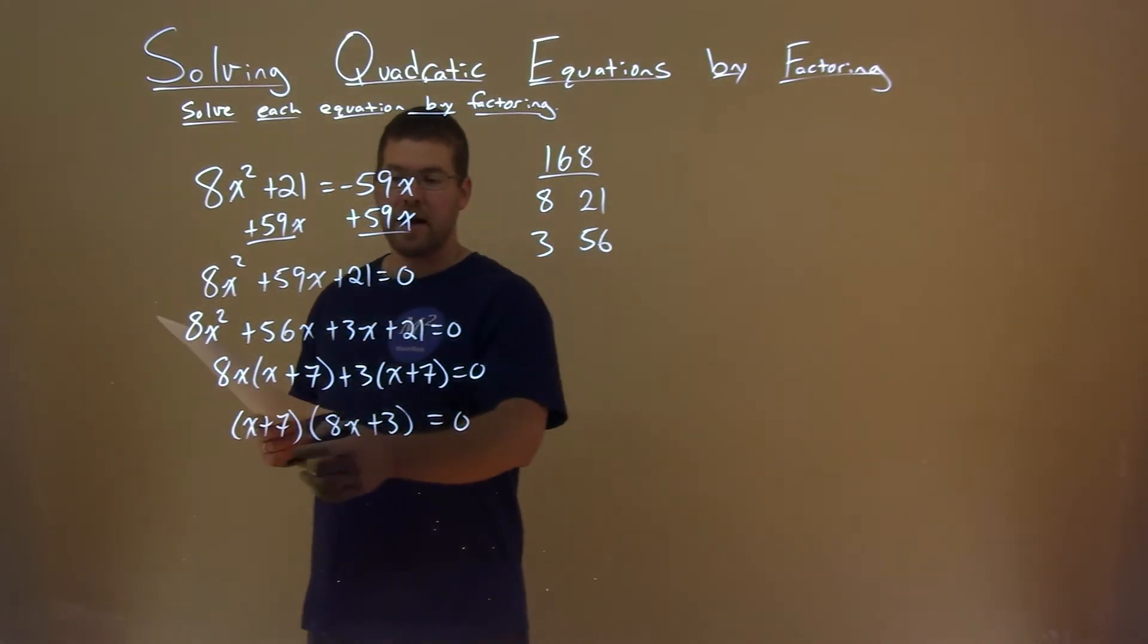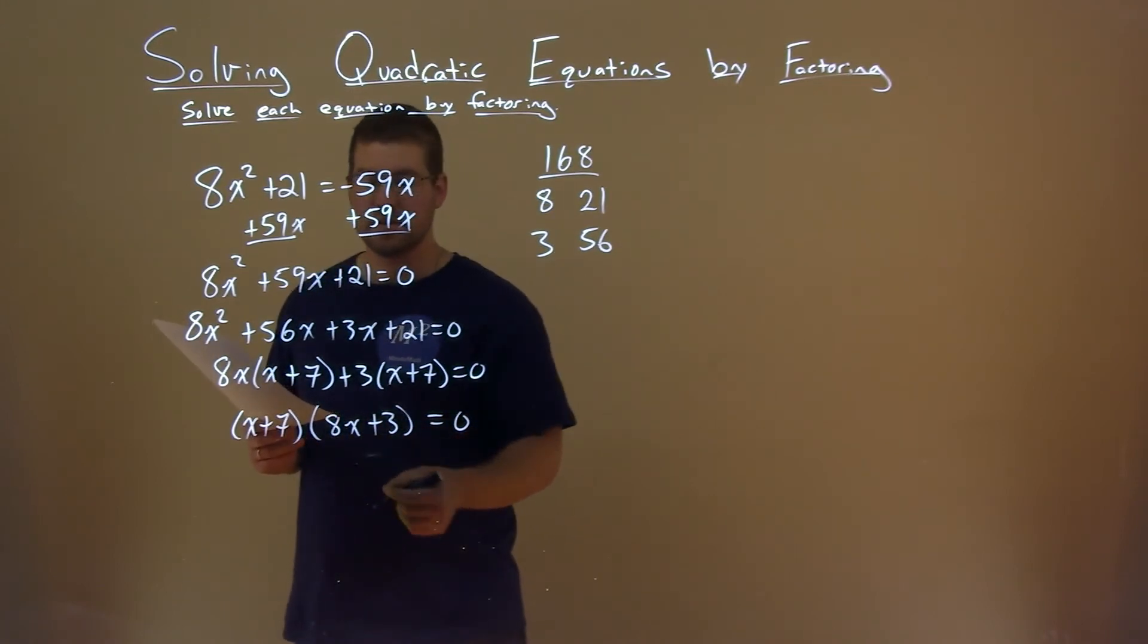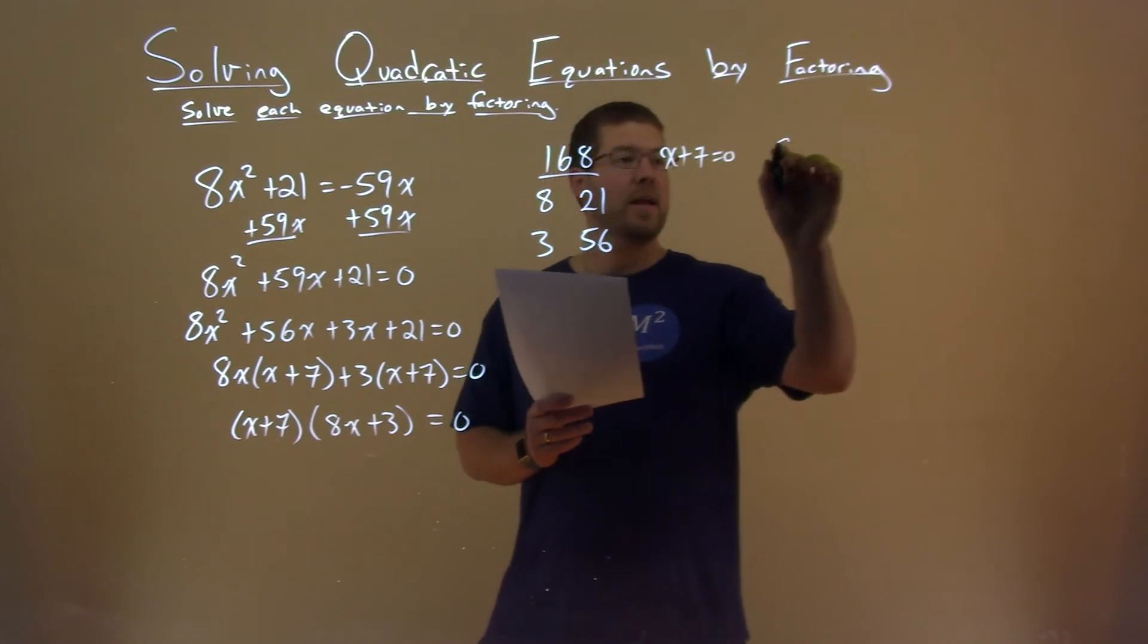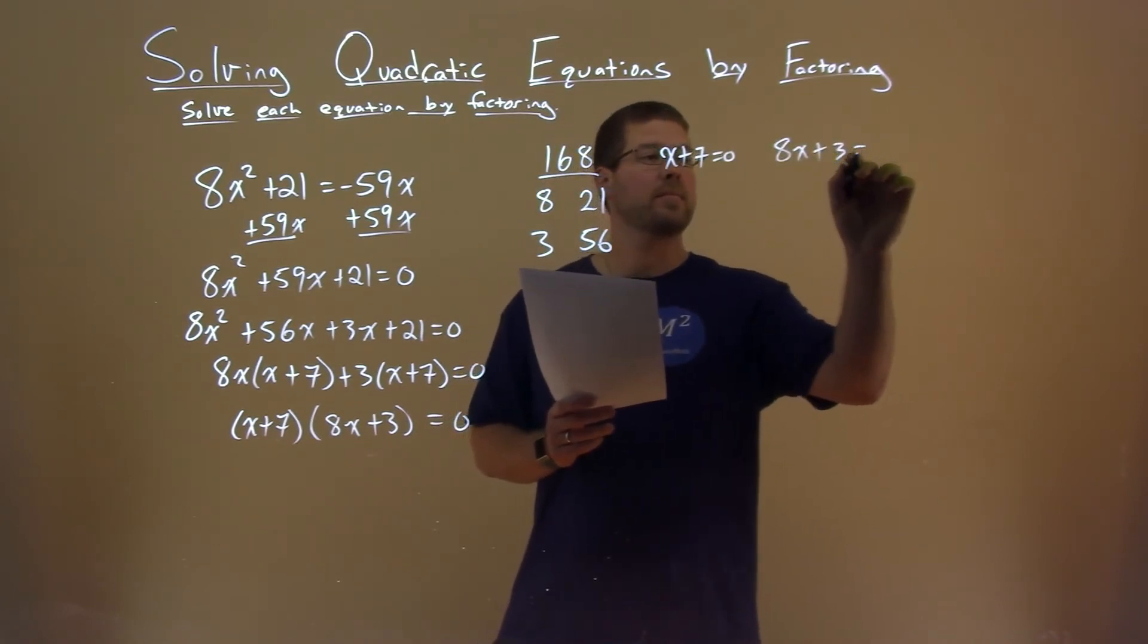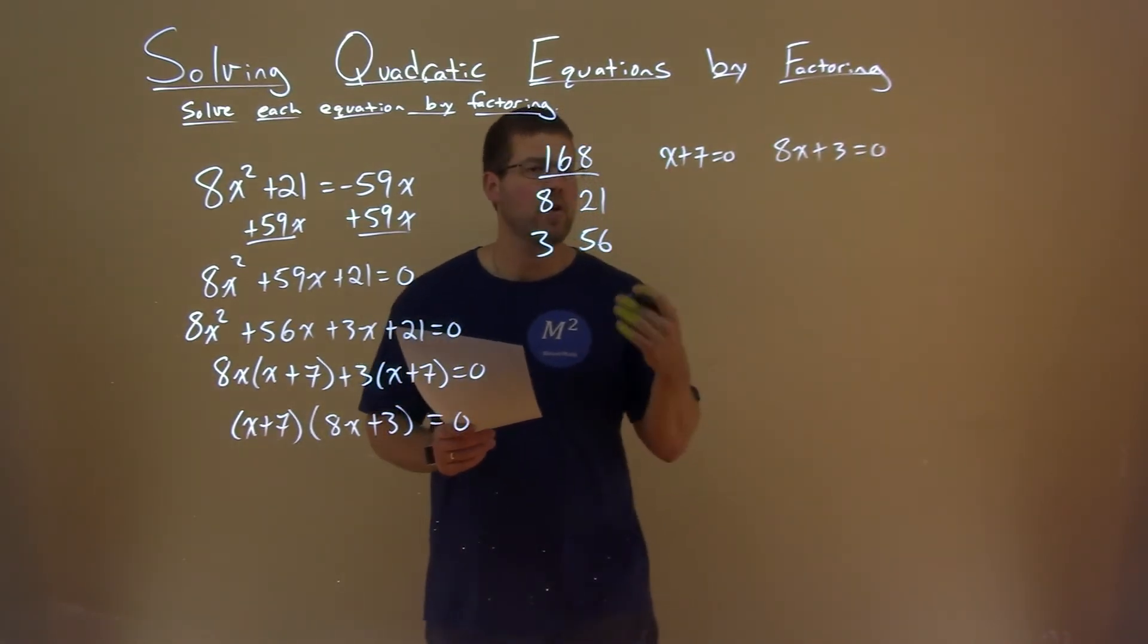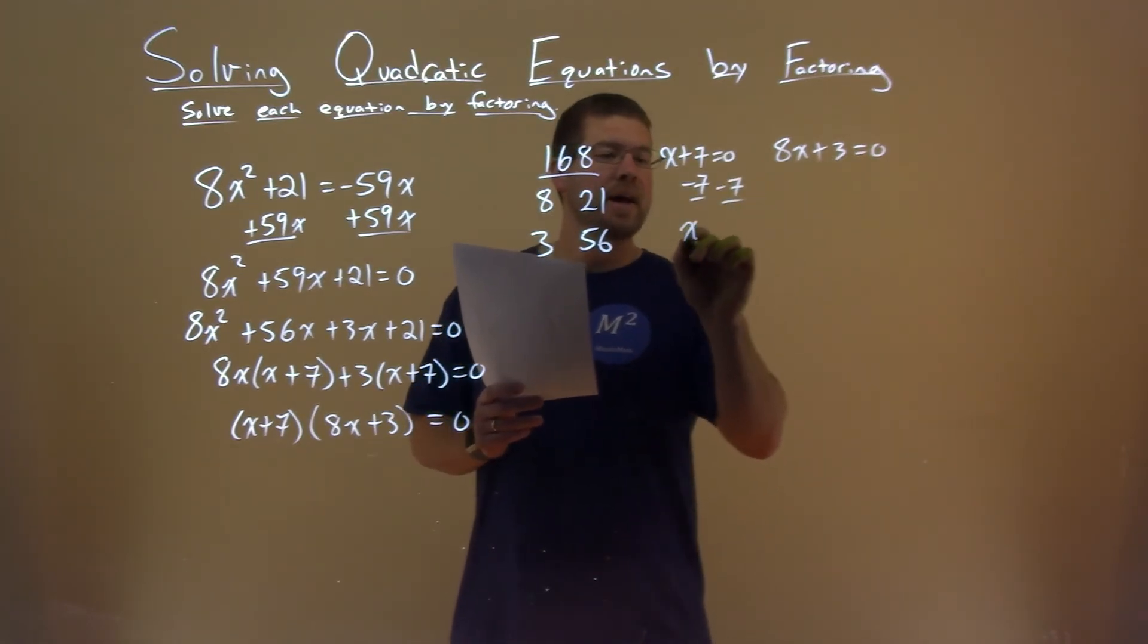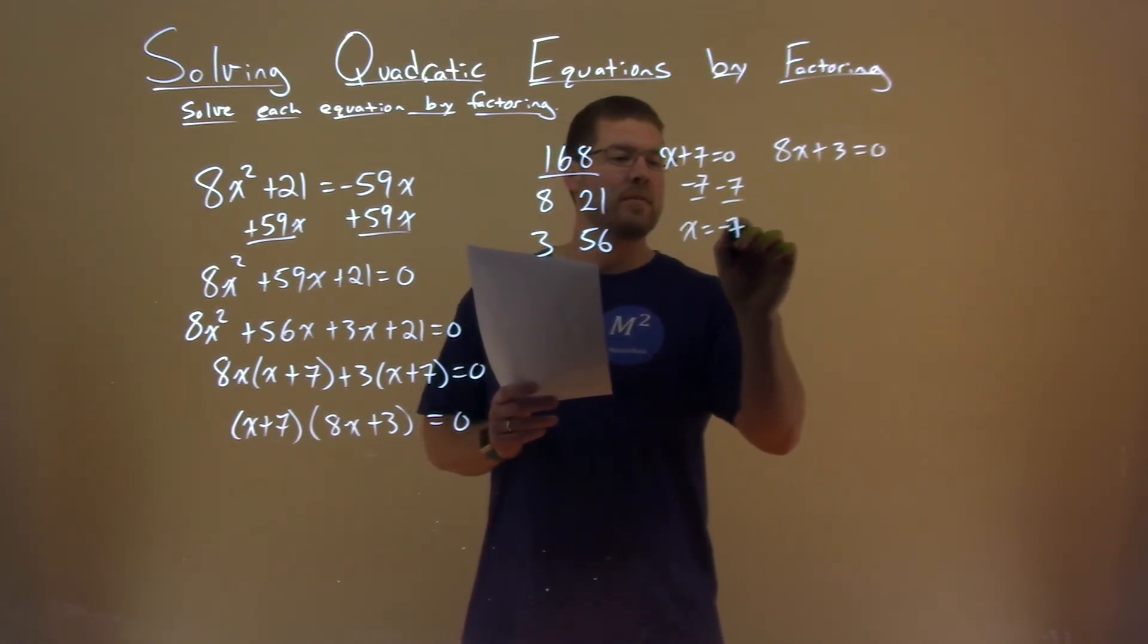Well, since it's factored now, we can set both parts equal to 0. So x plus 7 equals 0, and 8x plus 3 equals 0. And we're going to solve for x on both of them. Subtract 7 from both sides, x equals negative 7.